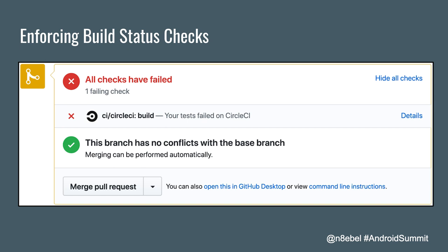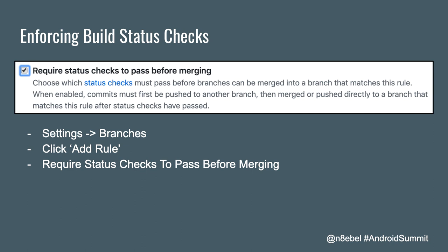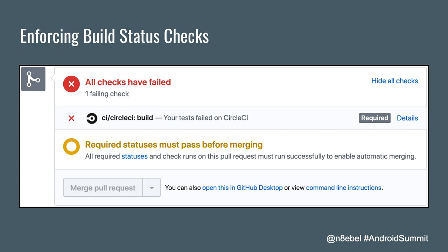The failed check gives us an indicator that maybe we don't want to merge this code right now. Note that by default the merge pull request button is still active, meaning you could still merge broken code. To fix this, go into GitHub settings, go to the branches section, click 'Add rule,' and check the box that says 'Require status checks to pass before merging.' This will disable the merge button until all status checks are successful, so you can only merge once everything is passing correctly.